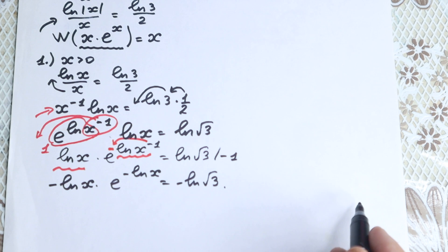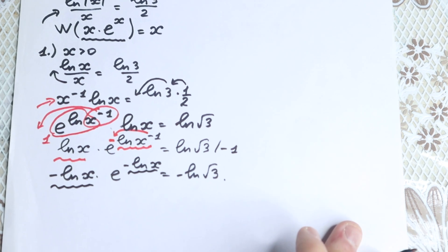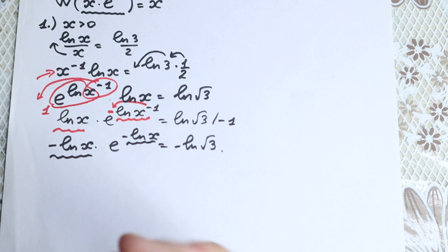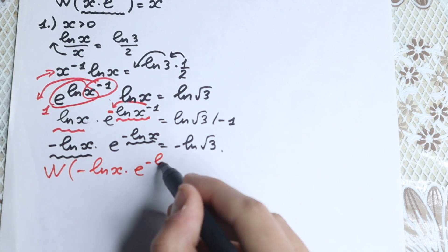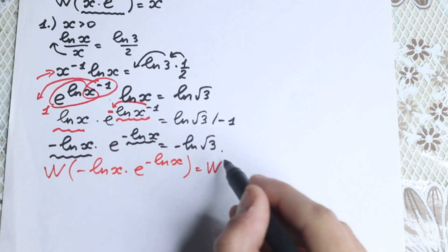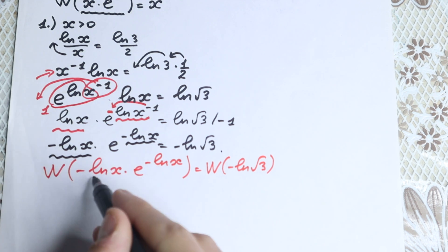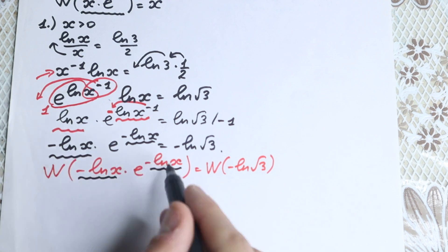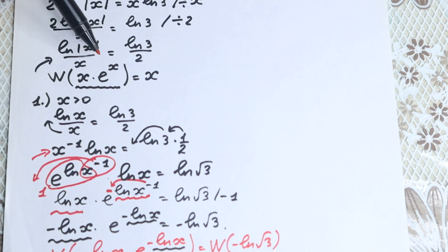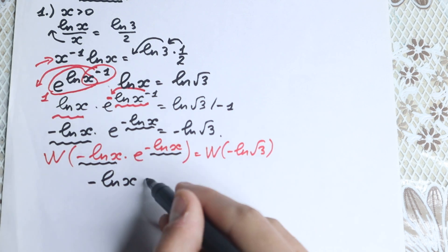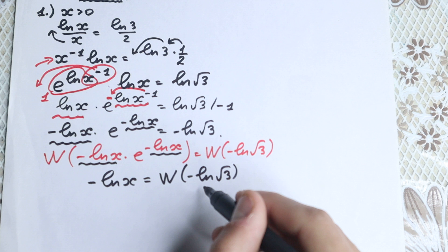Now let's apply the Lambert W function, because this matches our required form. Applying W to both sides: W(minus natural log x · e^(minus natural log x)) equals W(minus natural log of square root of 3). The left-hand side simplifies to minus natural log x. So: minus natural log x equals W(minus natural log of square root of 3). This right-hand side is a constant, which is great.